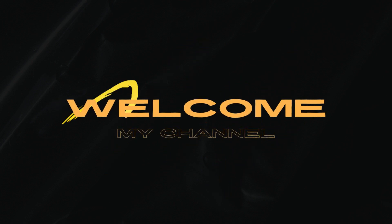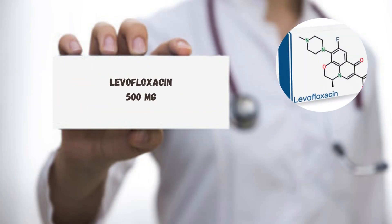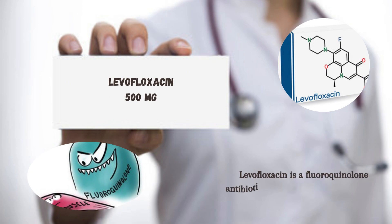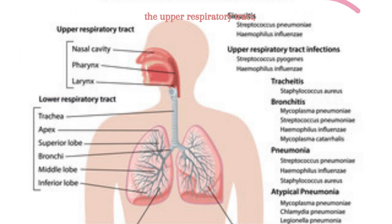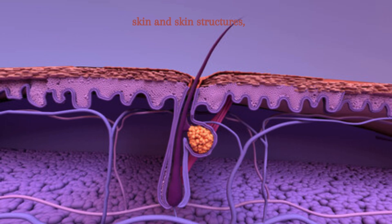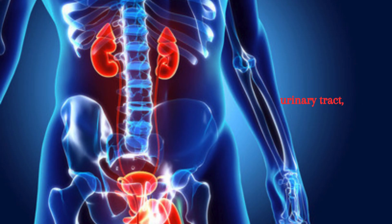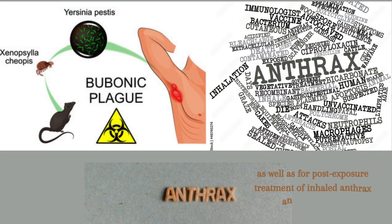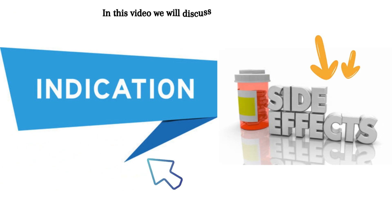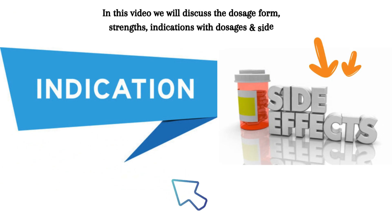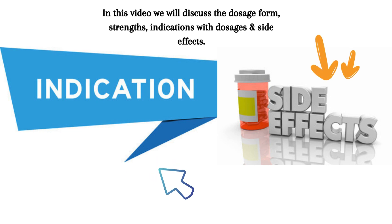Welcome to my channel Medicine Guide. Levofloxacin is a fluoroquinolone antibiotic used to treat infections caused by susceptible bacteria of the upper respiratory tract, skin and skin structures, urinary tract, and prostate, as well as for post-exposure treatment of inhaled anthrax and the plague. Brand name: Levaquin. In this video we will discuss the dosage forms, strengths, indications with dosages, and side effects.